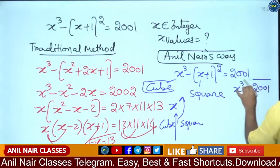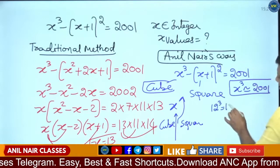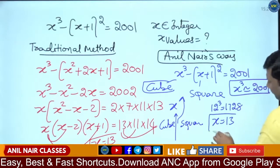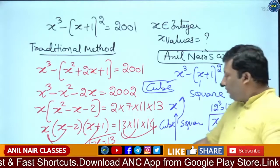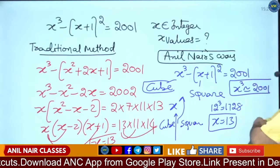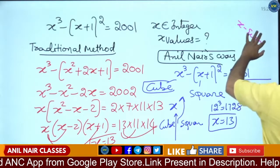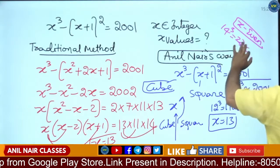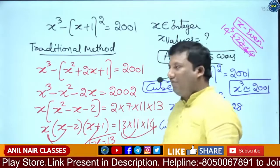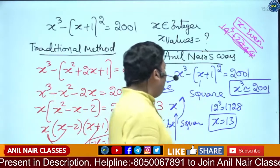So the value of x cubed should be closer to 2001. 12 cube is 1728, so x must be greater than 12. Let me put x value as 13. Why not try x equals 14? If I keep 14: 14 cube is 2744, 14 plus 1 is 15, 15 square is 225. So 2744 minus 225 is around 2500 — the value will be more than 2001. So the only value that will satisfy is 13.